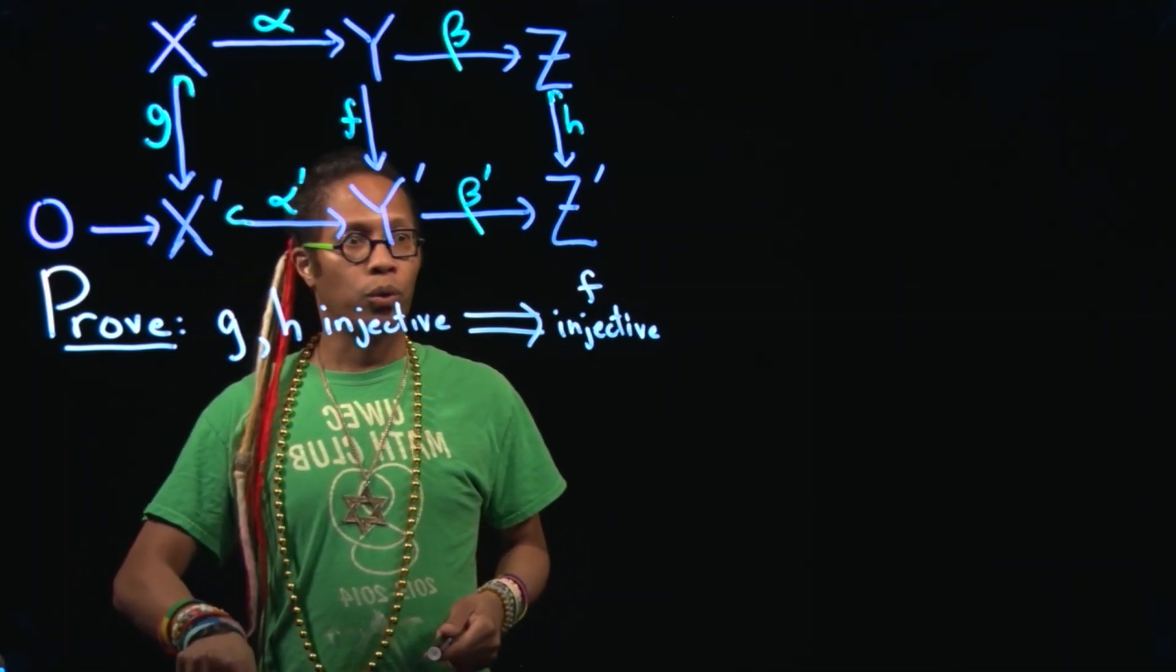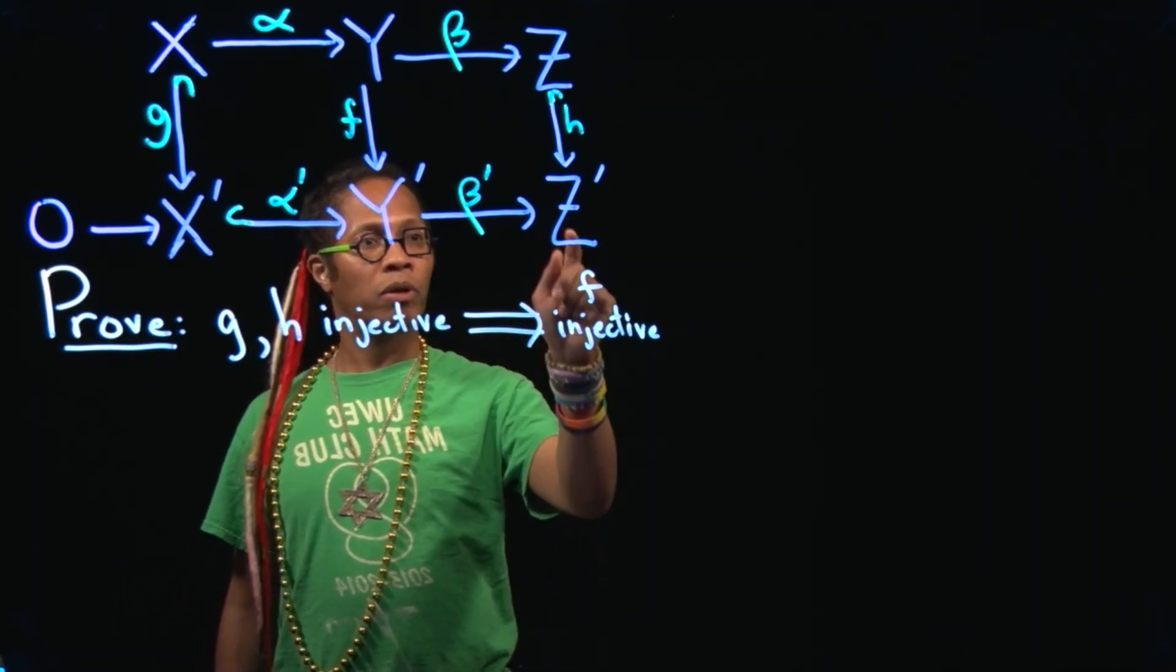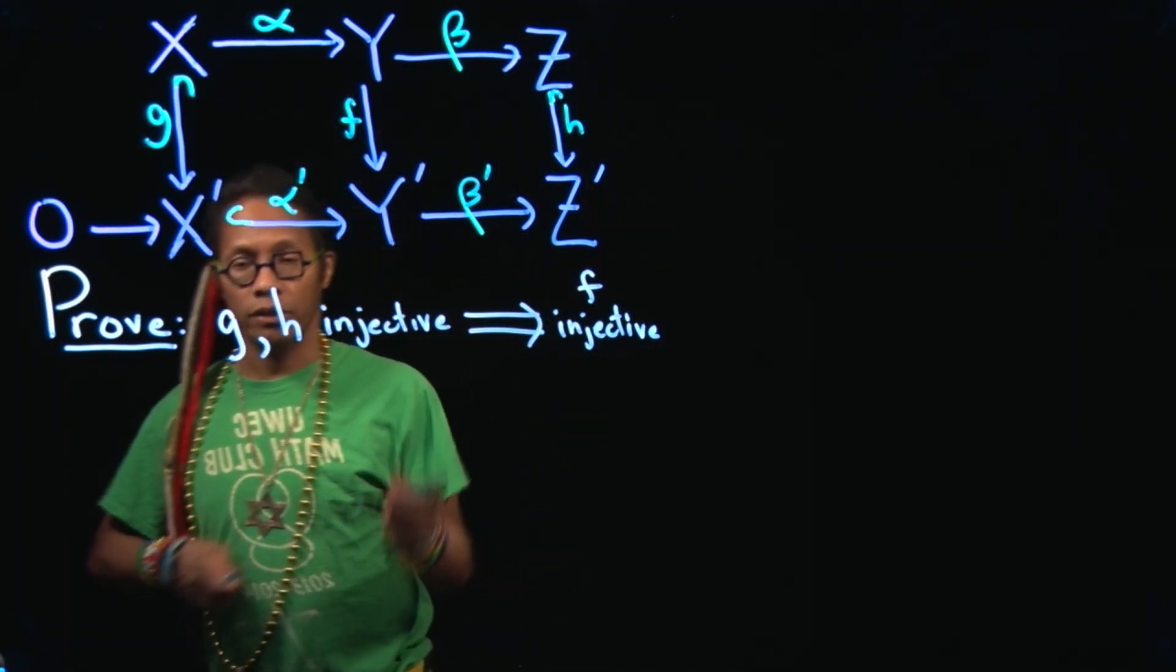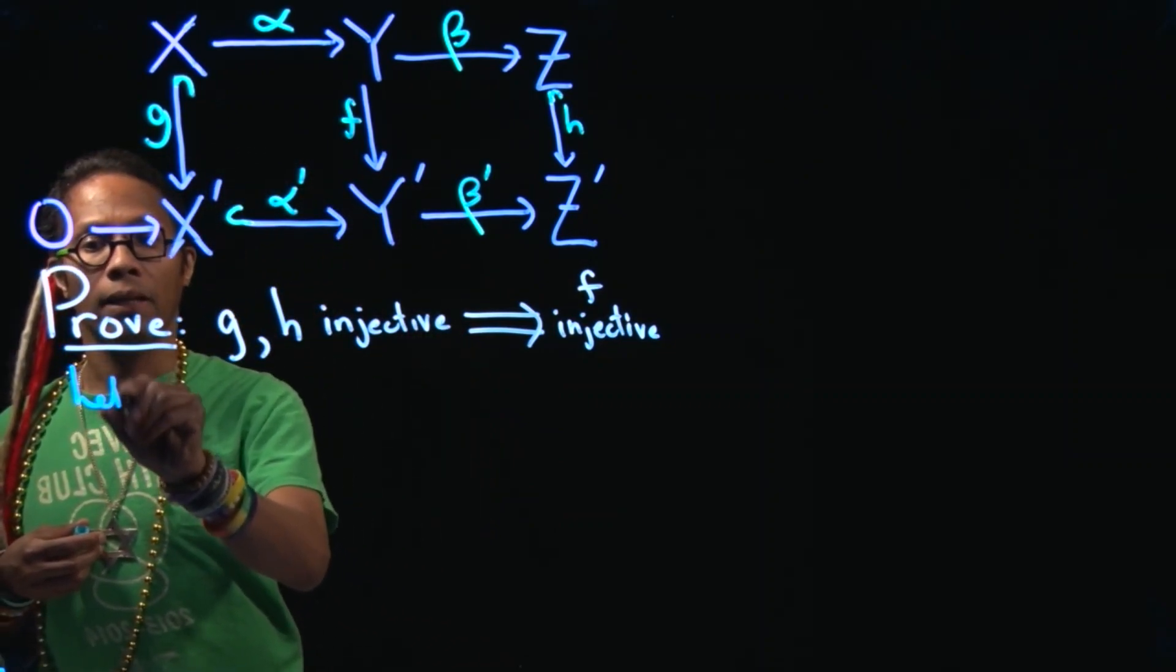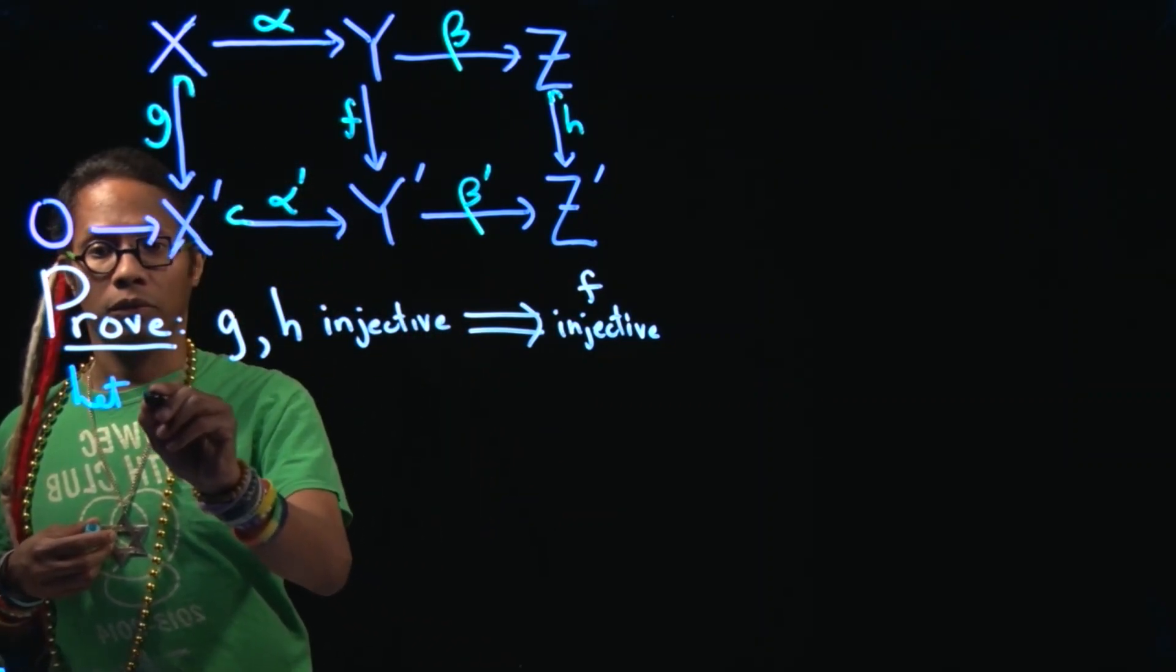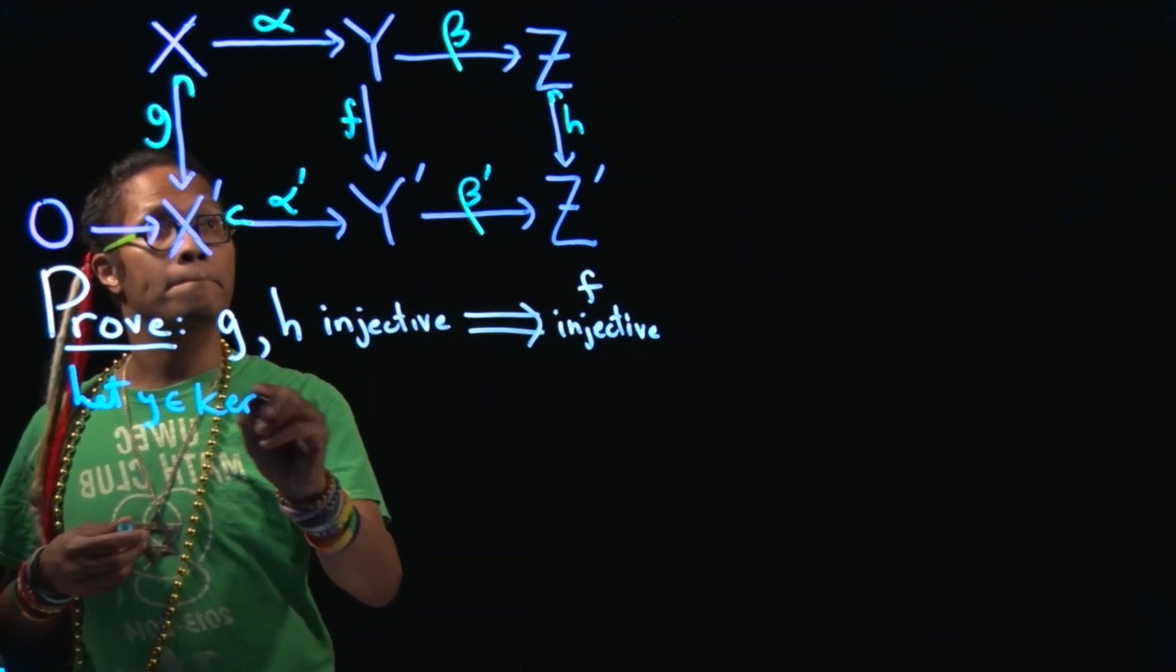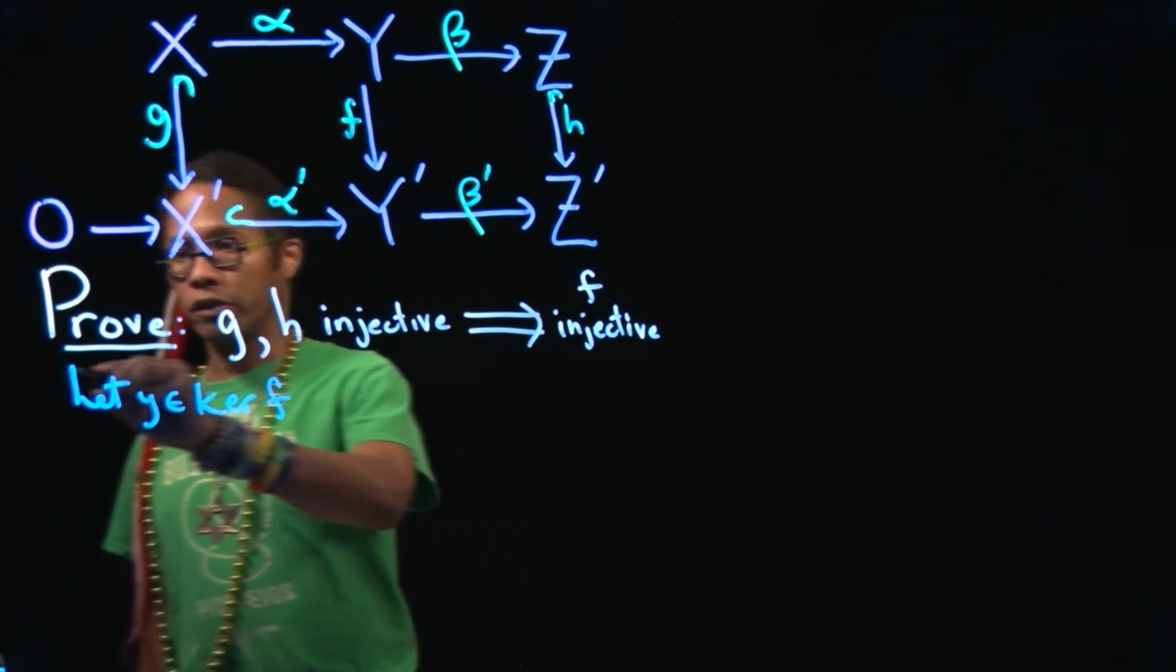And so let's begin the proof. We're going to assume G is injective, H is injective. We want to prove F is injective given that the rows of the diagram are exact. So let's start as any injective proof of F will start. Let Y be in the kernel of F. This is the start of our proof.